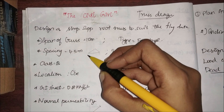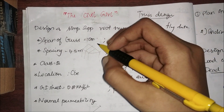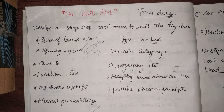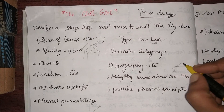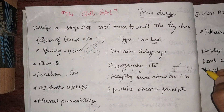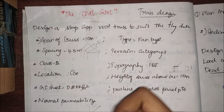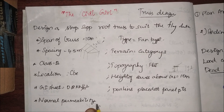The span of the truss is 10 meters and the spacing is 4.5 meters. Spacing means the distance between trusses in the 3D view. The terrain category is 3, type is fan type truss, class is B. Topography is flat, location is Coimbatore, height of the eaves above ground level is 10 meters — basically the height of the column. The self-weight of the GI sheet is 0.8 kN/m², and purlins are placed at panel points. Normal permeability is given for wind calculations.